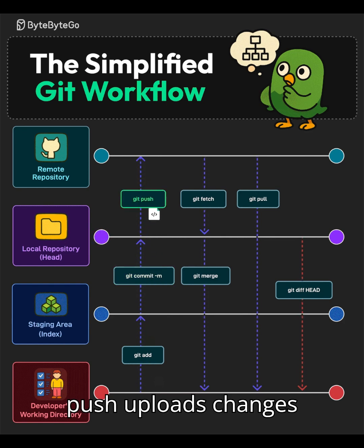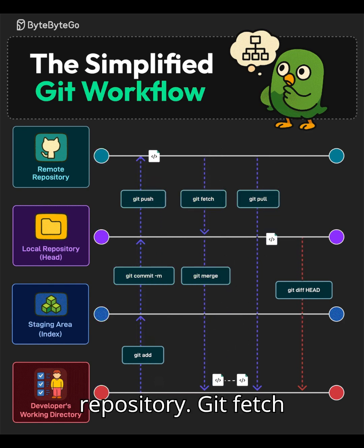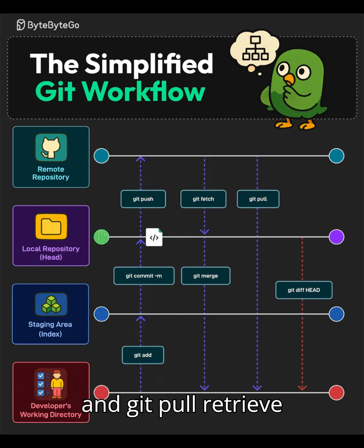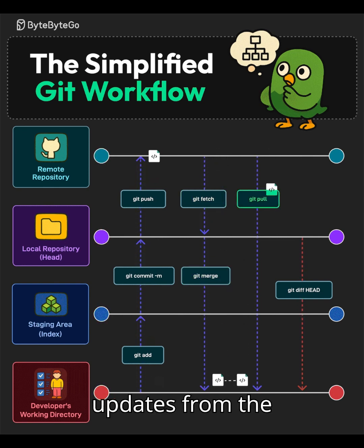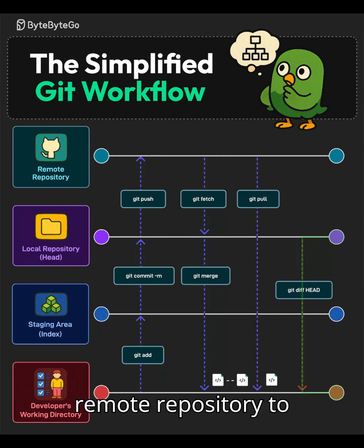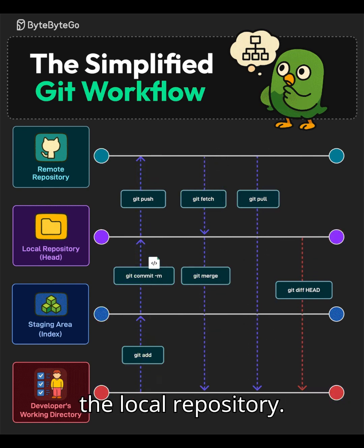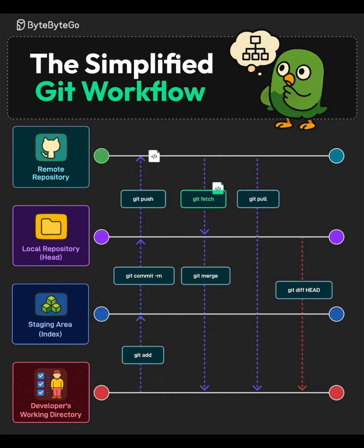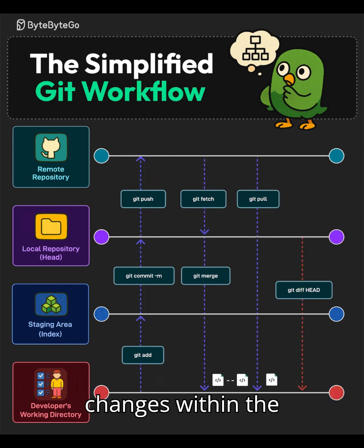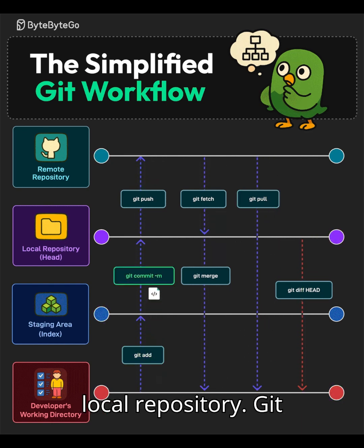Git Push uploads changes to the remote repository. Git Fetch and Git Pull retrieve updates from the remote repository to the local repository. Git Merge integrates changes within the local repository.